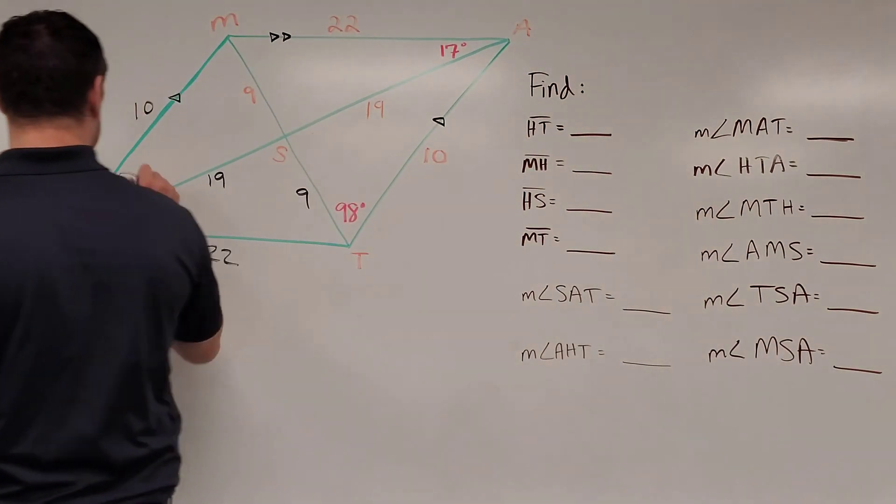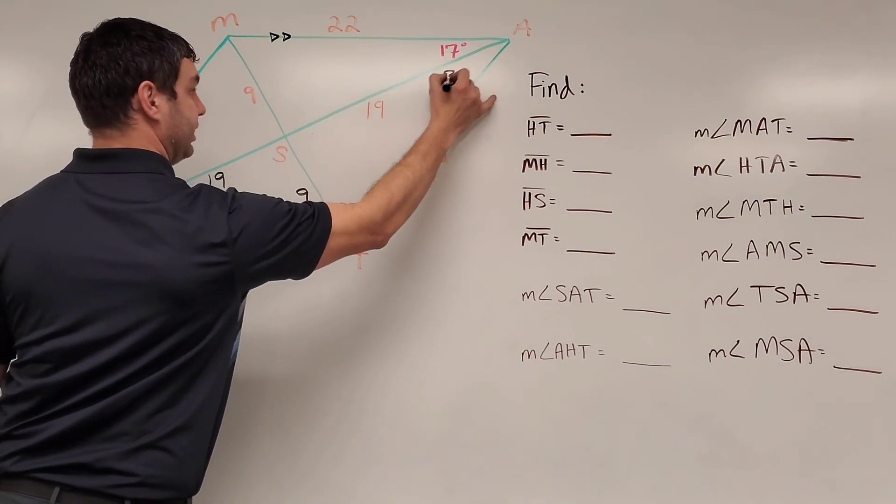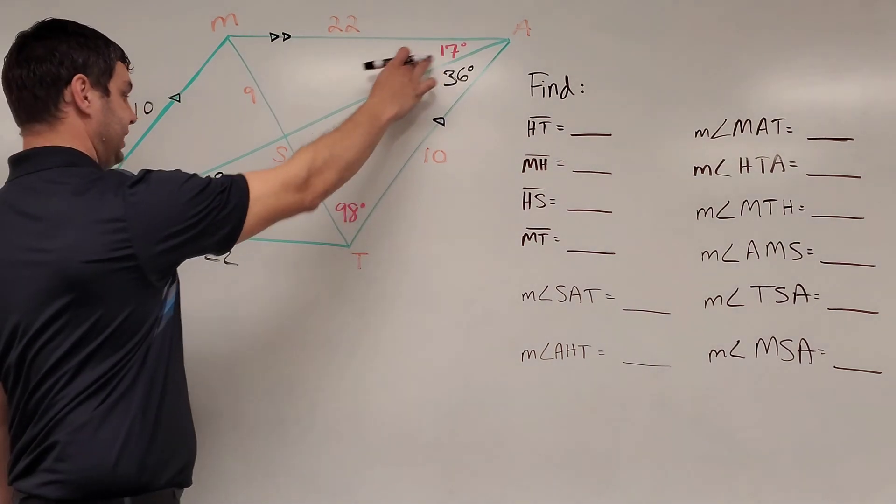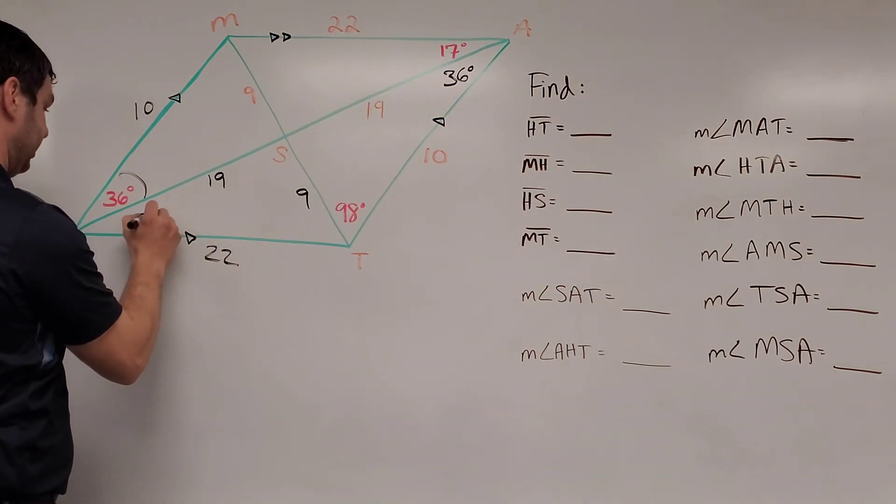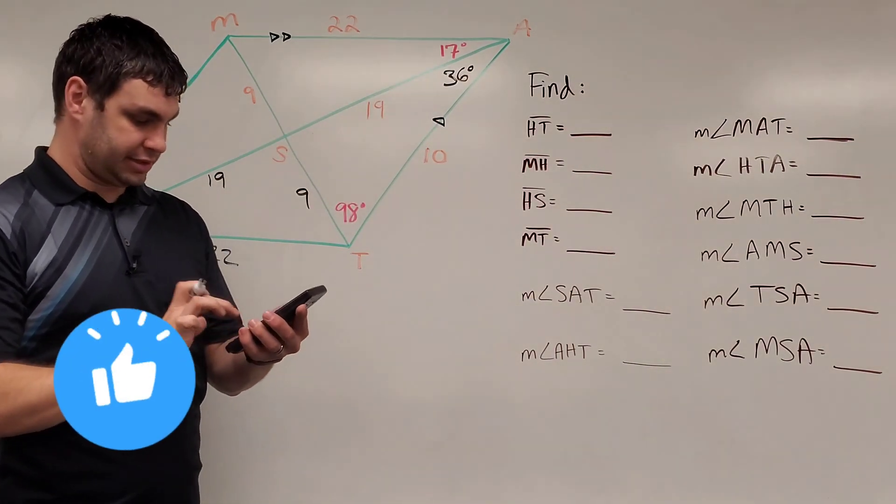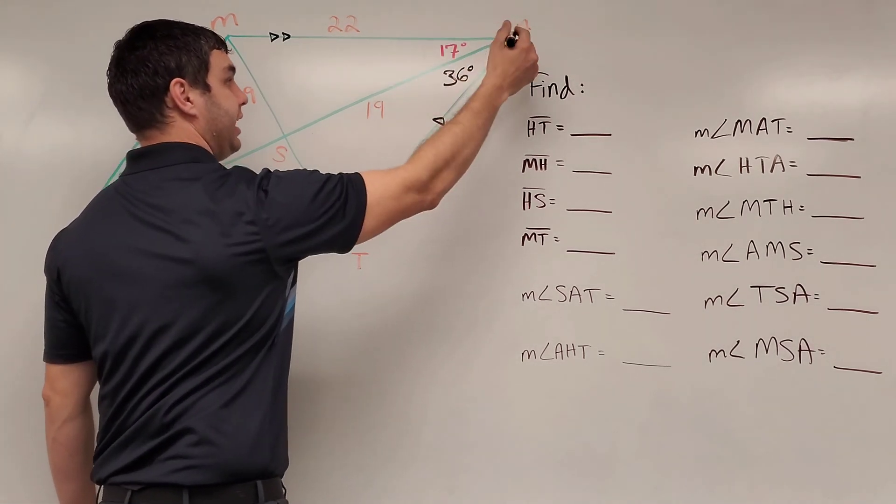Or in other words, if this is 36 degrees, its alternate interior angle up here is also going to be 36 degrees. Similarly, if this is 17 degrees, down here is also 17 degrees. And then you can add those together. Right, 17 plus 36, and get 53 degrees for this entire angle A.